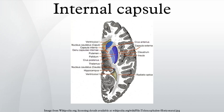The internal capsule is V-shaped when cut horizontally in a transverse plane. When cut horizontally, the bend in the V is called the genu.